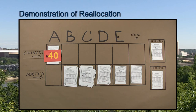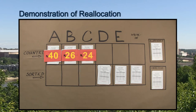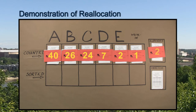In this demonstration, Candidate A received 40 first-choice votes. Candidate B received 26. Candidate C, 24. Candidate D, 7. And Candidate E received 2. There was 1 first-choice vote for a write-in candidate, 2 suspended ballots, and 2 inactive ballots.